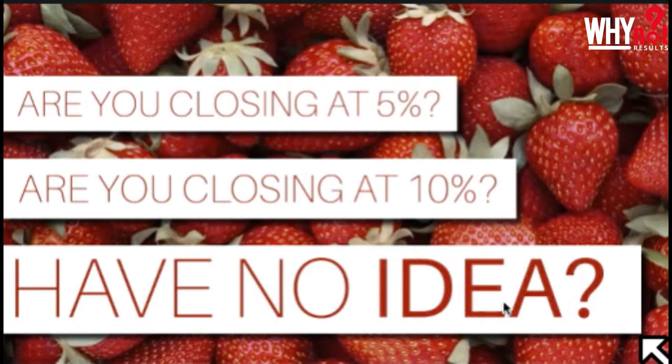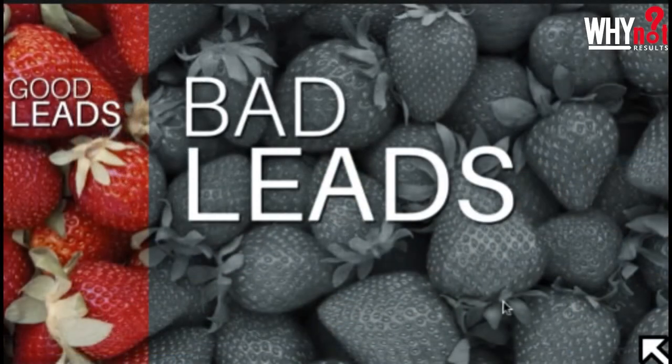If you're closing 5 or 10%, what you're saying is that your garden looks something like this: you have this small sliver of good leads and then this huge amount of bad ones. I would never put time and energy into a garden that only produced this small amount of good fruit. And I don't believe this is actually how lead generation and lead conversion works.